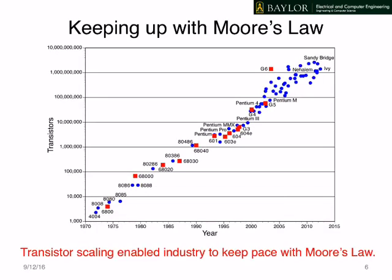We begin with the motivation for QCA, which really comes from the end of the transistor scaling roadmap. For decades we've increased computer performance by shrinking the transistor, and this has happened at a pace defined as Moore's Law, where we double computing performance every 18 months. Shrinking the transistor has enabled this because smaller transistors mean more of them fit onto a square centimeter of silicon. Additionally, we can move smaller amounts of charge around the circuit, and this takes less time, so smaller transistors operate faster.